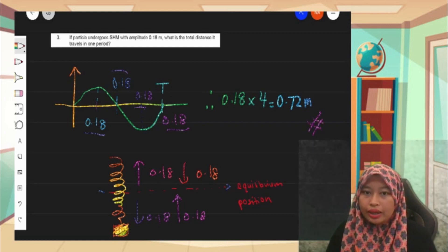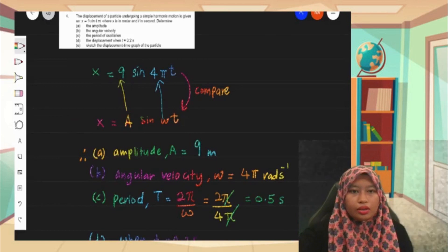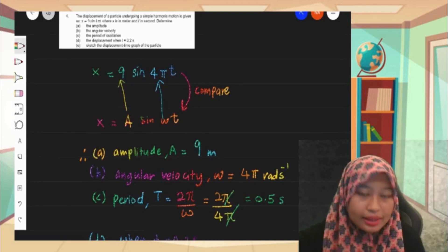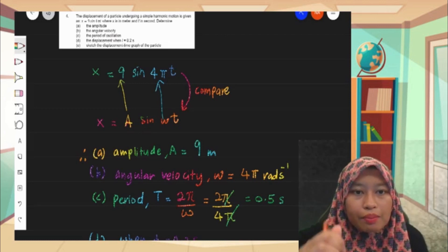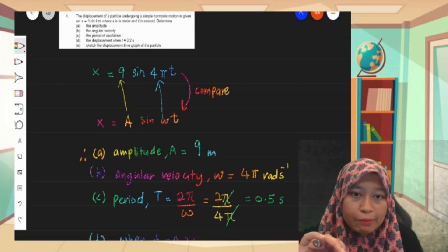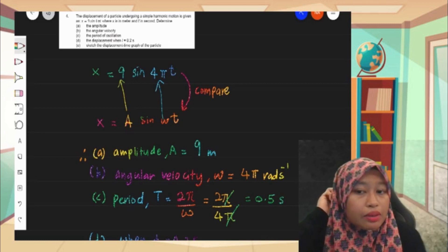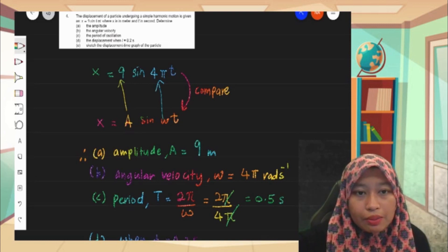For number four, the displacement of a particle undergoing simple harmonic motion is given as s equals 9 sine 4π t, where s is in meter and t in second. Determine: A, amplitude; B, angular frequency; C, period of oscillation; D, displacement when time is equal to 0.2 second; and E, sketch the displacement-time graph.